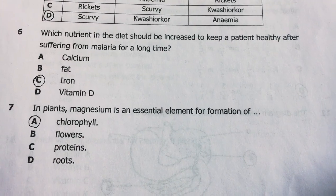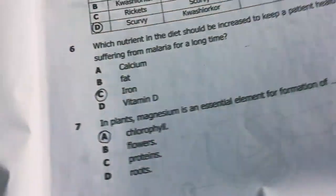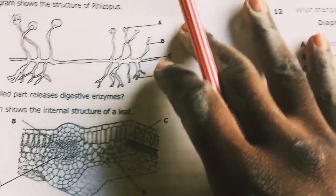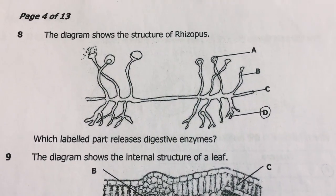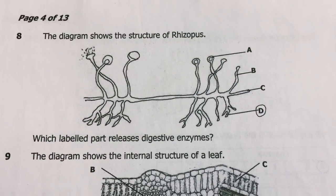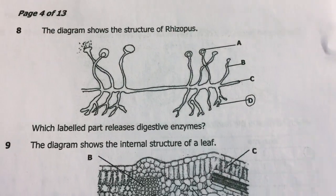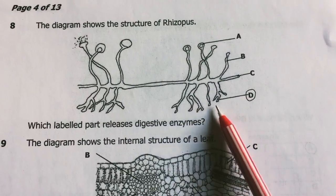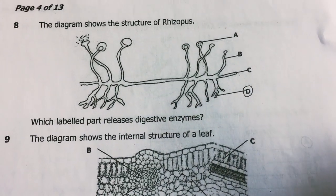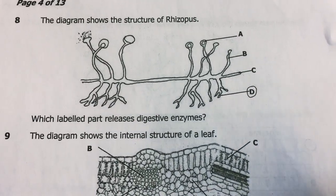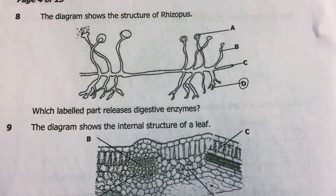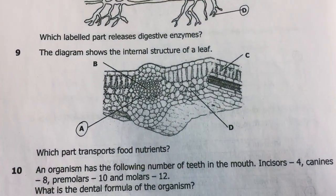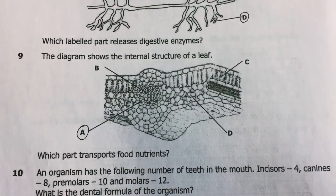Question 7: In plants, magnesium is an essential element for the formation of chlorophyll. The answer is A. Question 8: The diagram shows the structure of Rhizopus for saprophytic nutrition. Which labeled part releases digestive enzymes? The answer is D — those structures grow into the substrate, release enzymes to digest it, and then absorb the end products.